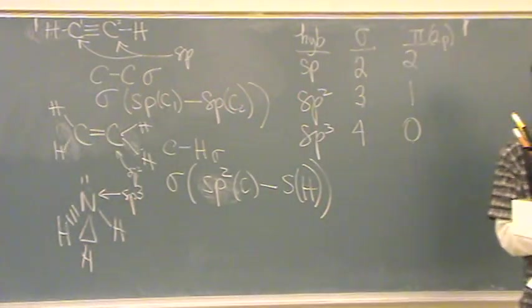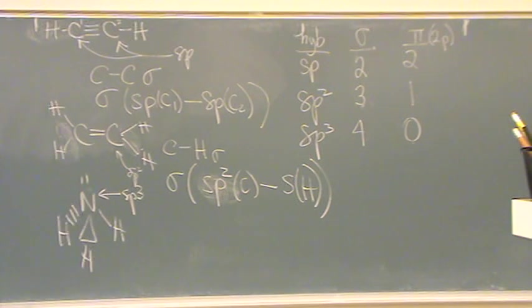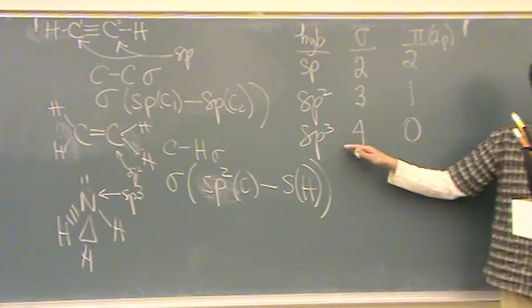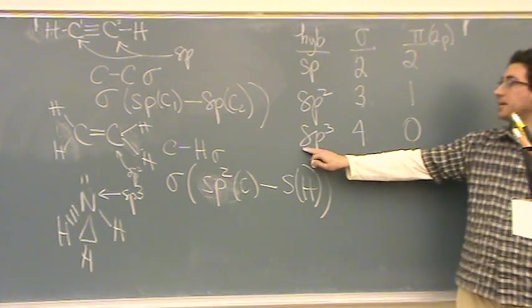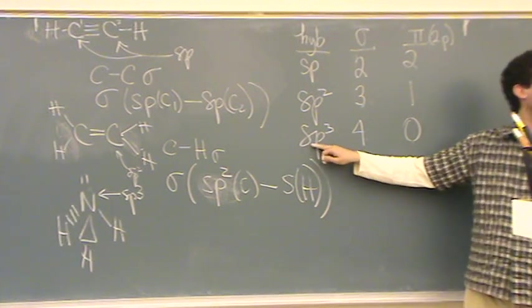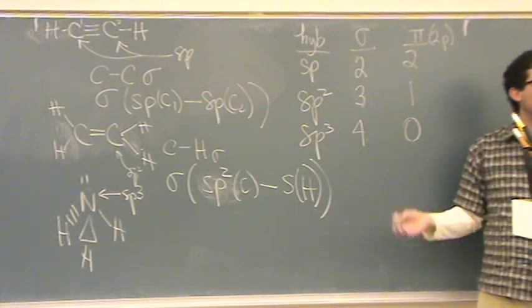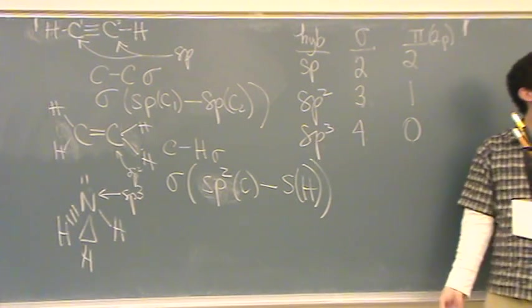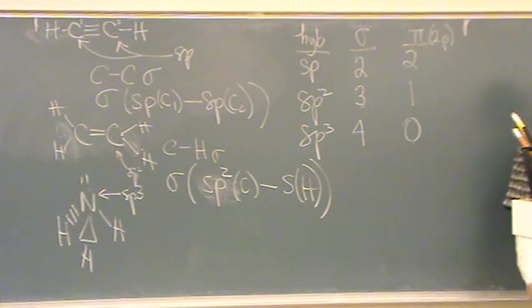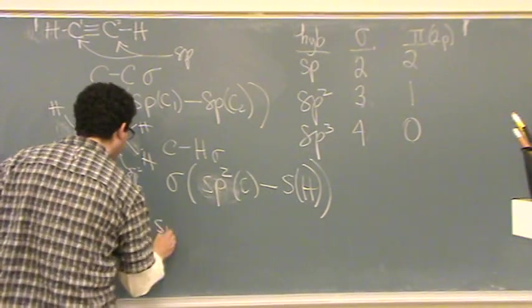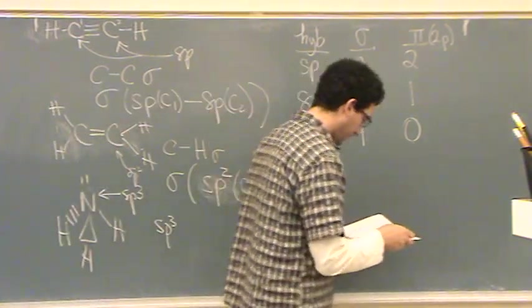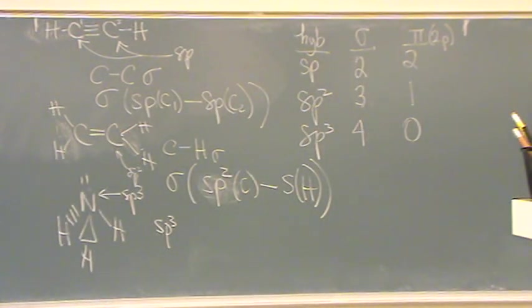SP3. There's four groups, so it's SP3. This only forms sigma bonds, and they're all SP3 hybridized. So there's only one choice. It has to be in the SP3 hybrid orbitals. There's no 2P orbitals when an SP3 hybridizes. So the answer is just SP3. The electrons are in the SP3 hybrid orbitals.